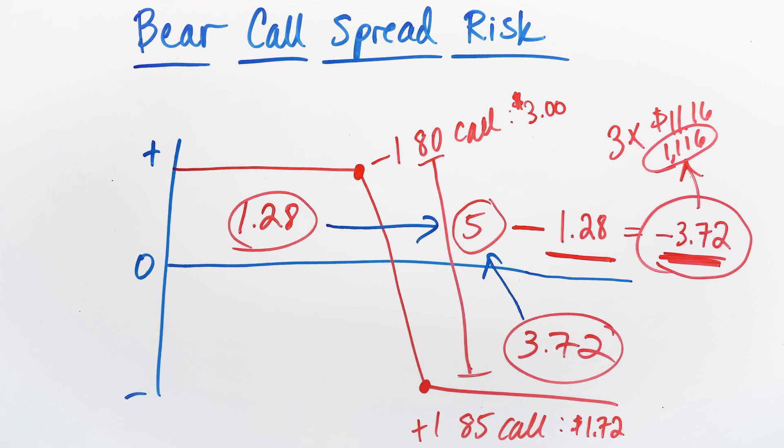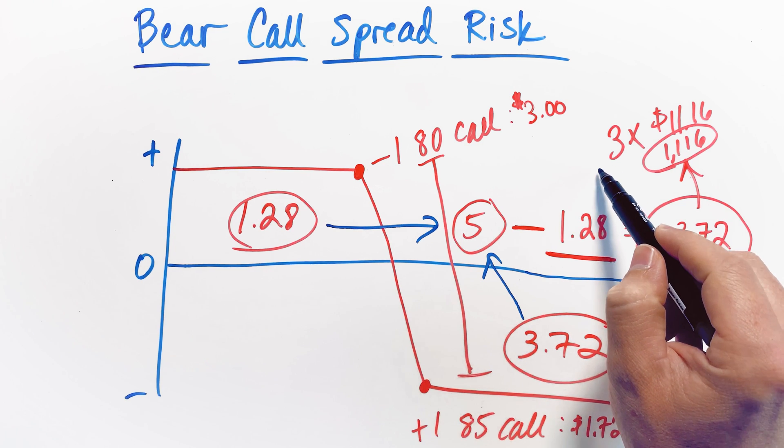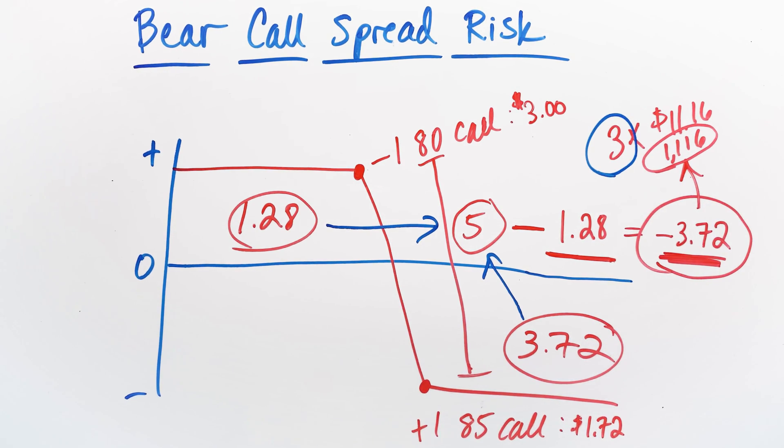Again, it's just really simple to go through it on an individual contract basis first. That's the way I do it. And then you take that individual contract risk and you multiply that by the number of contracts that you're trading. That gives you a good idea of how much total risk the position is carrying in your account. As always, if you guys have any questions on how to calculate bear call spreads or anything else options related, let us know in the comments and until next time, happy trading.